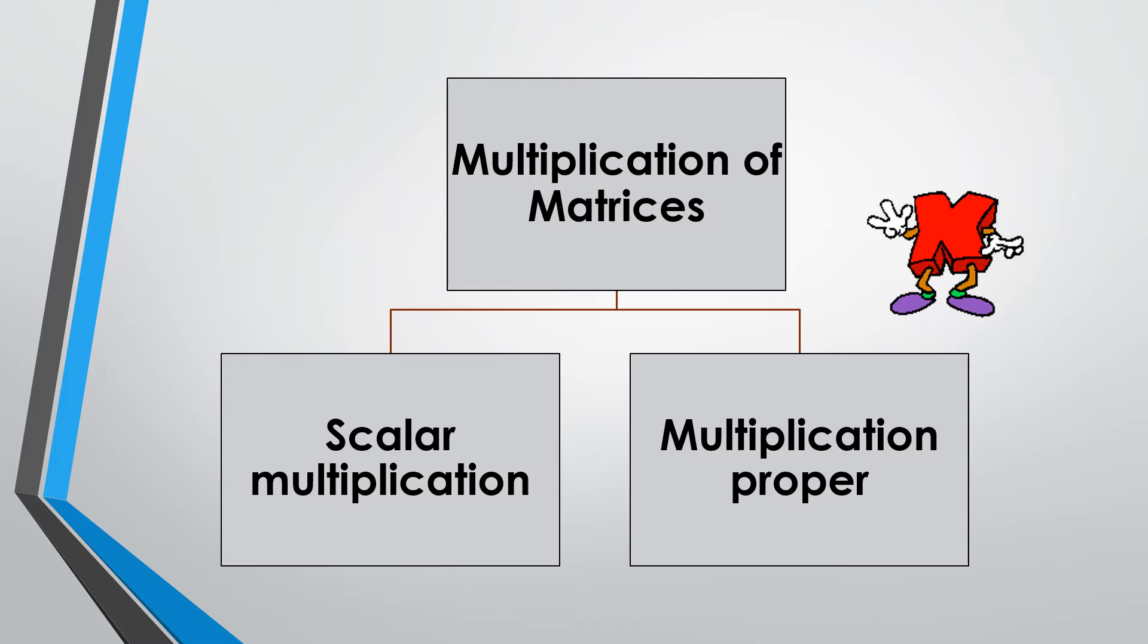Multiplication of matrices. There can be two types of multiplication with the matrices. They are scalar multiplication and multiplication proper.